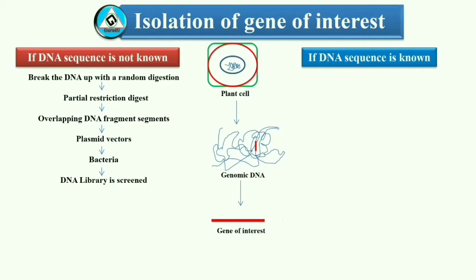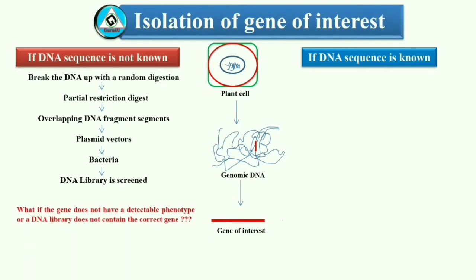Once in the bacteria, the plasmid is copied as the bacteria divides. To determine if a useful gene is present on a particular fragment, the DNA library is screened for the desired phenotype. If the phenotype is detected, then it is possible that the bacteria contain the target gene. If the gene does not have a detectable phenotype or the DNA library does not contain the correct gene, other methods must be used to isolate it. If the position of the gene can be determined using molecular markers, then chromosome walking is one way to isolate the correct DNA fragment.